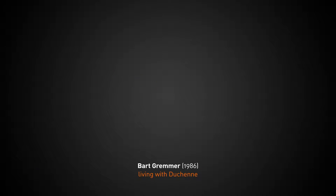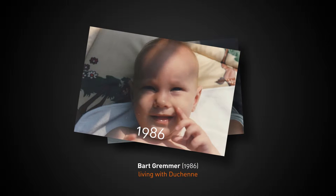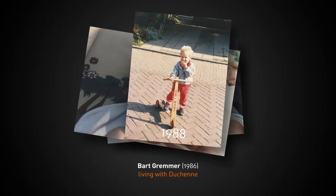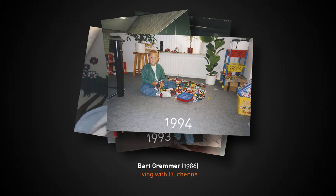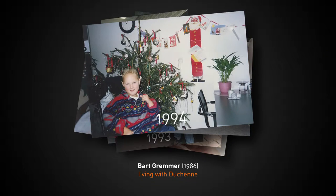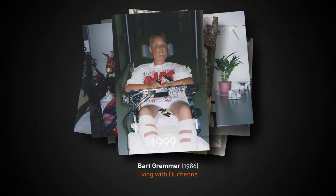One in 5,000 boys are born with Duchenne. It is a serious genetic defect which causes continuous and irreversible damage to muscle tissue. Duchenne is mostly diagnosed when children are around four or five years old. The first signs are that motor development is delayed and the child trips frequently.